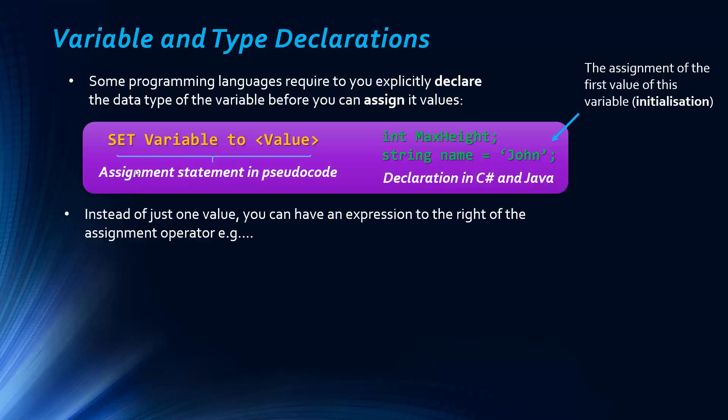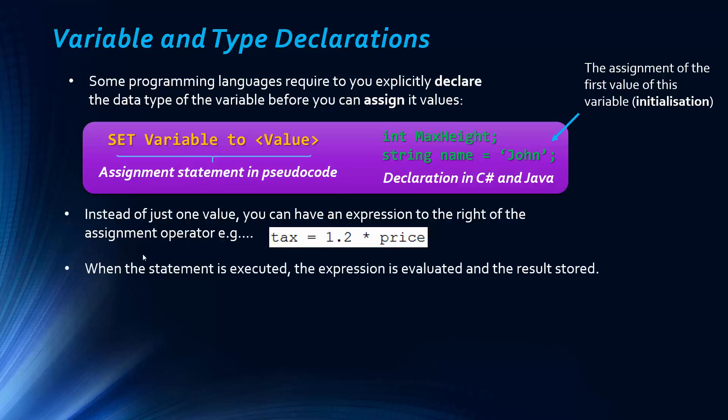So instead of just one value, you could have an expression to the right of the assignment operator. So this isn't necessarily about declaration anymore. So this variable in Python tax, we have an expression, not just a single value to the side of it. We're going to work something out, it's going to be evaluated. When the statement is executed, the expression is evaluated and the result is stored under tax.